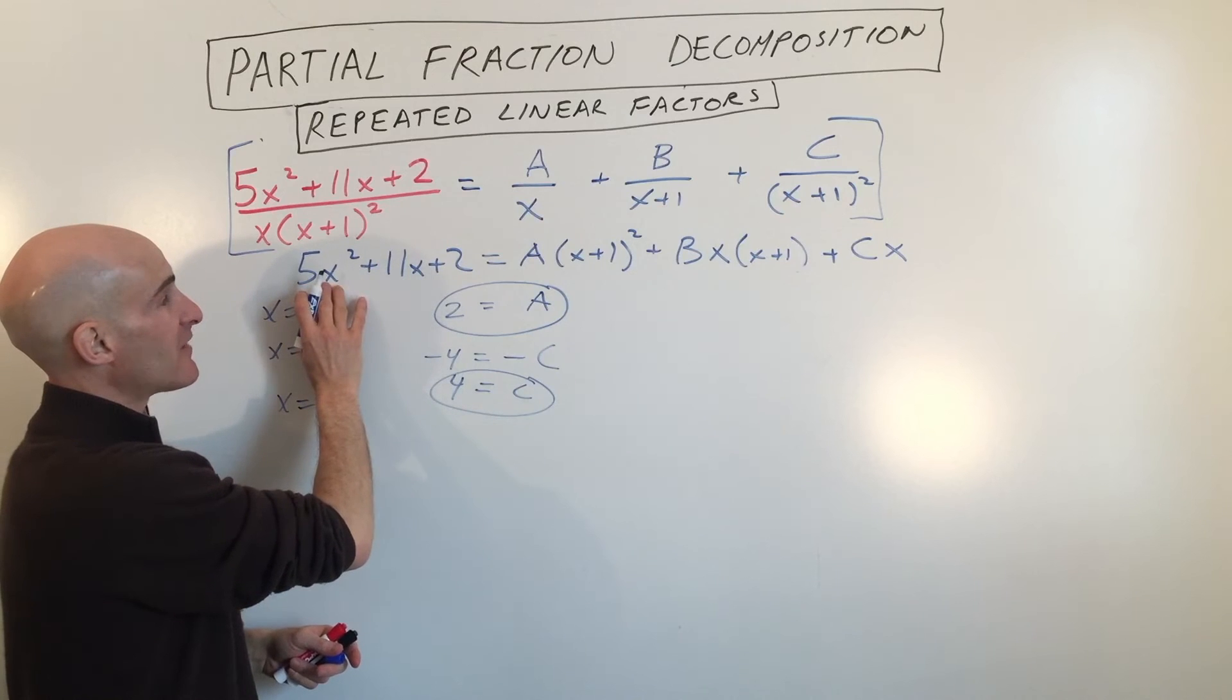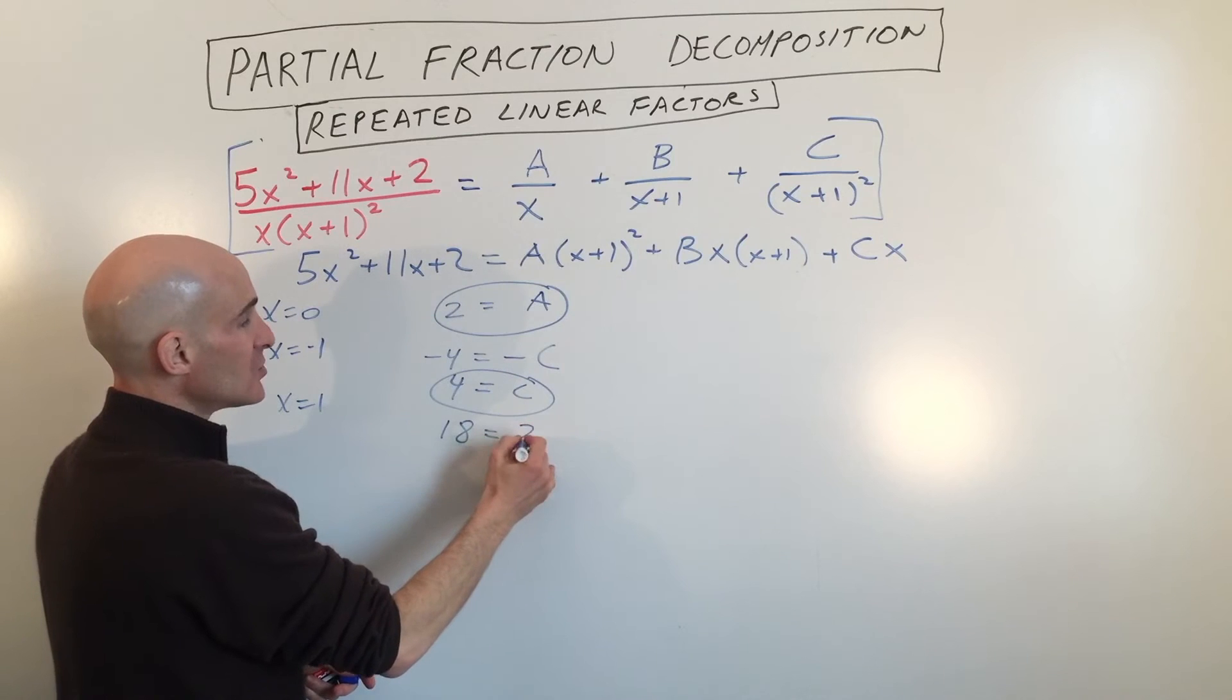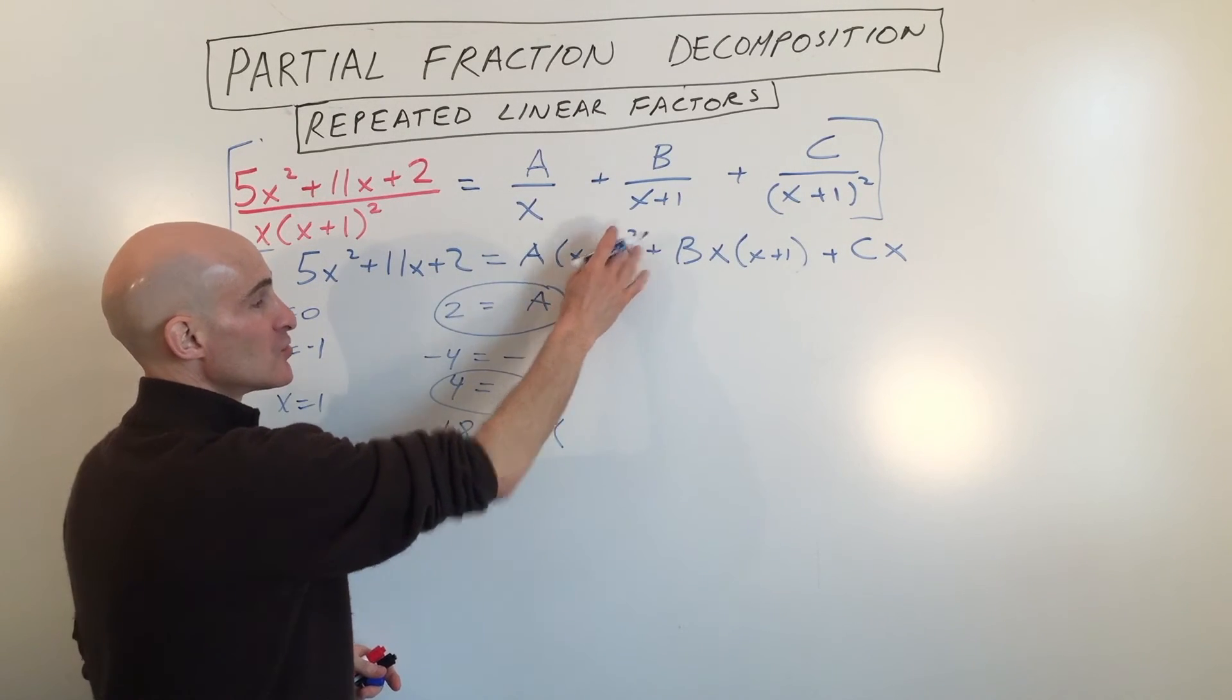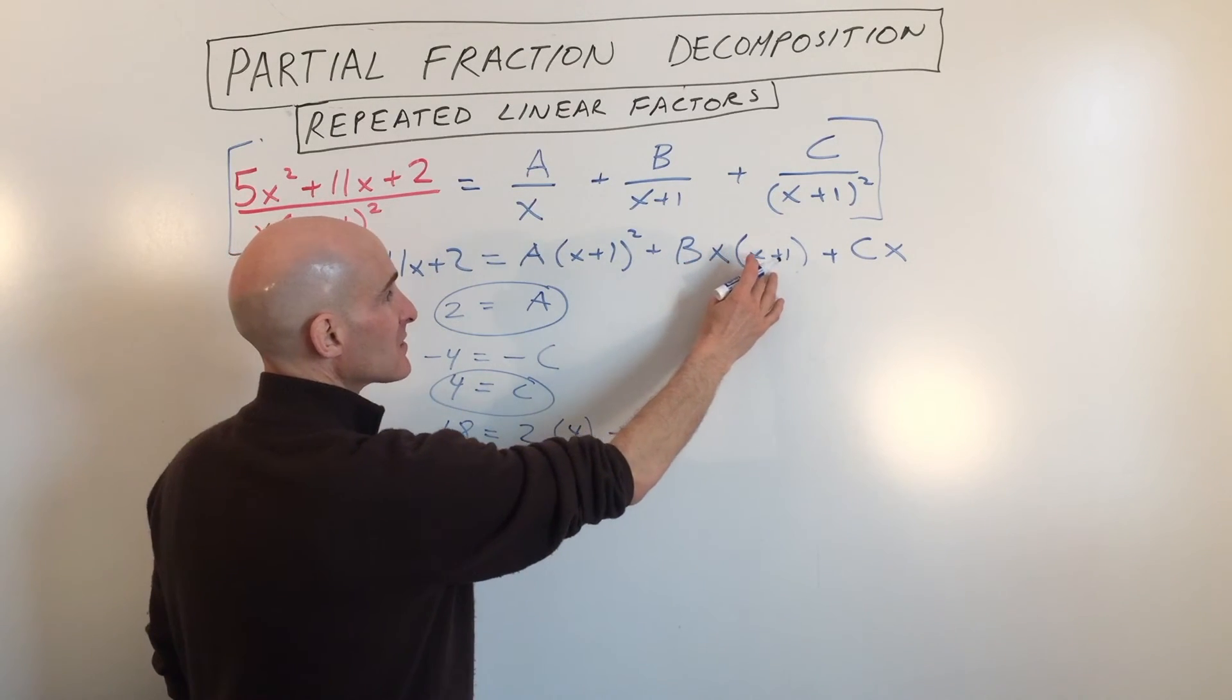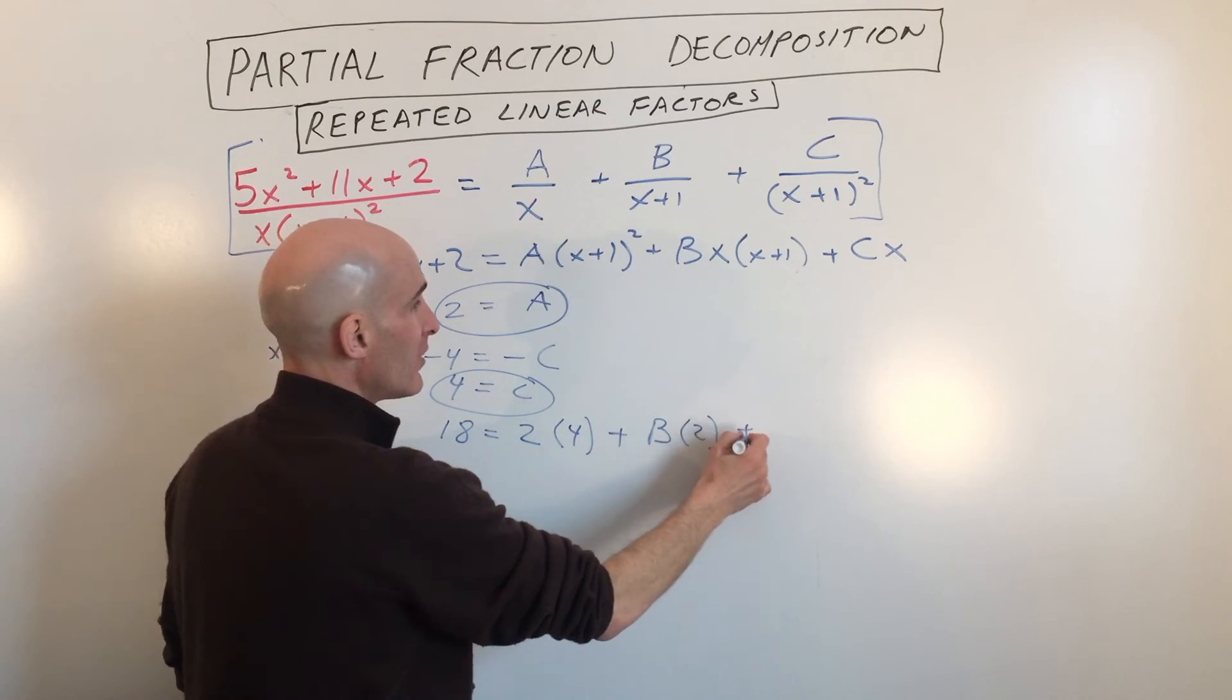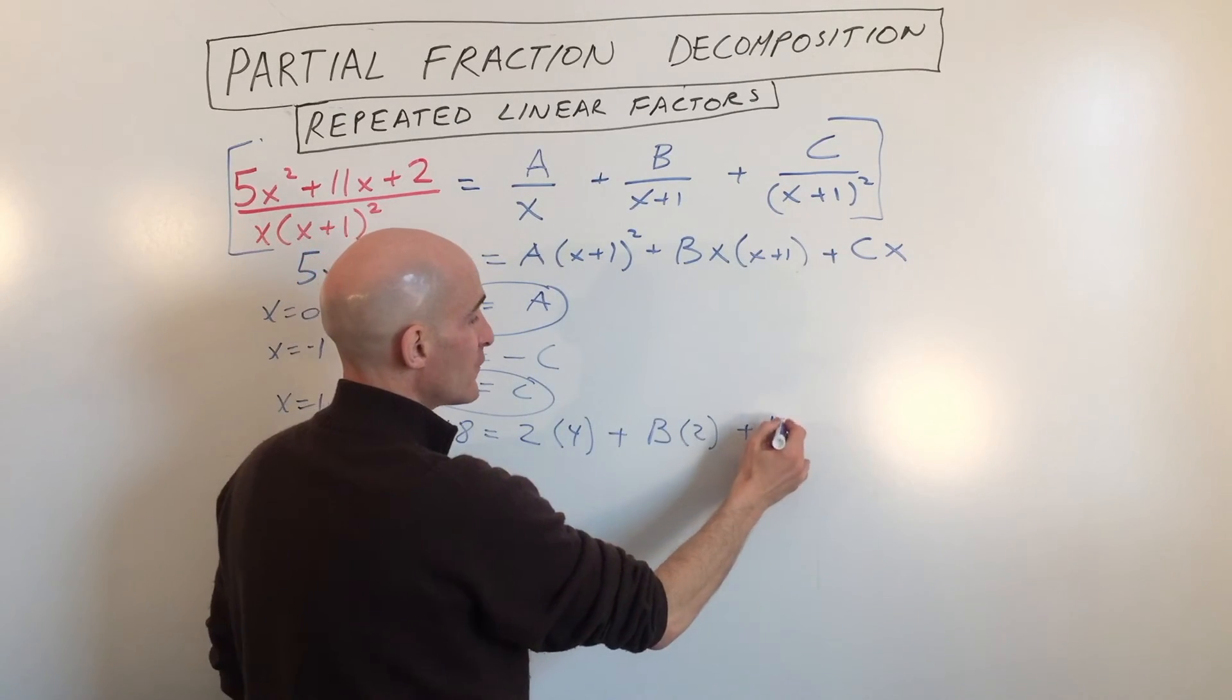A we already know is 2 and we're putting 1 in for x. That's 1 plus 1 is 2, 2 squared is 4. Okay, B we don't know times 1 times 1 plus 1 is 2. So that's going to be B times 2 plus C we know is 4. So that's 4 times 1 which is 4.